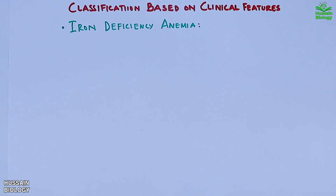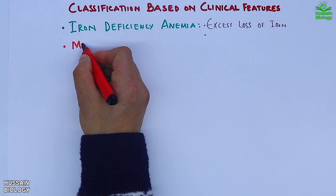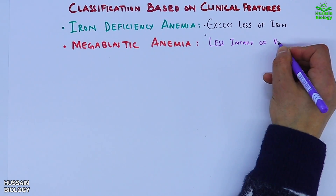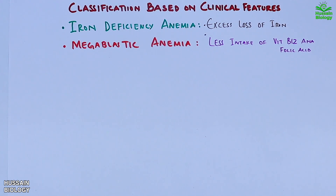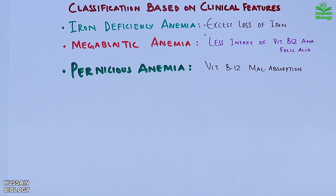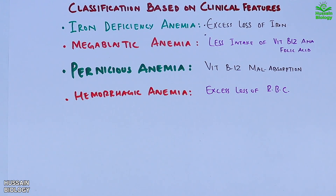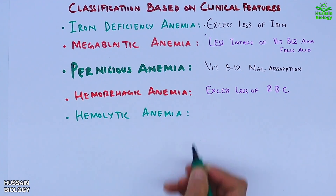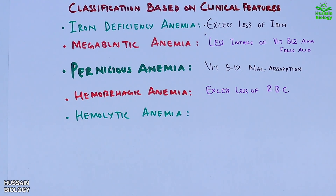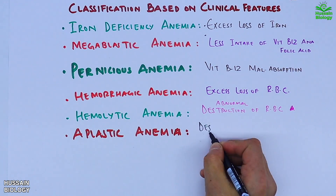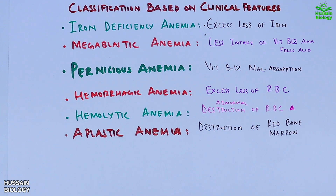Anemia is also classified on the basis of clinical features. First is iron deficiency anemia, with excess loss of iron. Second is megaloblastic anemia, due to less intake of vitamin B12 and folic acid. Third is pernicious anemia, due to vitamin B12 malabsorption in the small intestine. Fourth is hemorrhagic anemia, due to excess loss of RBCs. Fifth is hemolytic anemia, due to abnormal destruction of RBCs. Finally, aplastic anemia is due to destruction of red bone marrow.